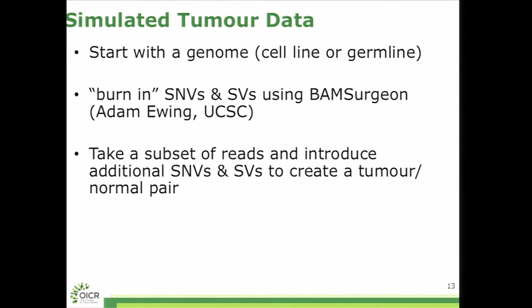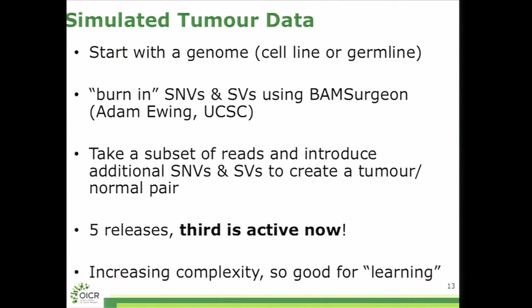We would split this into two, take a subset of the reads, call one the tumor, and spike in additional SNVs and SVs, again at the read level, to create an artificial tumor normal pair. There are five releases of these, they're coming out every six weeks, a third one is active right now. The idea is to have increasing complexity, so the first one is relatively simple, it assumes a 100% cellular tumor, there are no subclones or anything, it's meant to give an upper bound for just how accurate our tools are going to be.